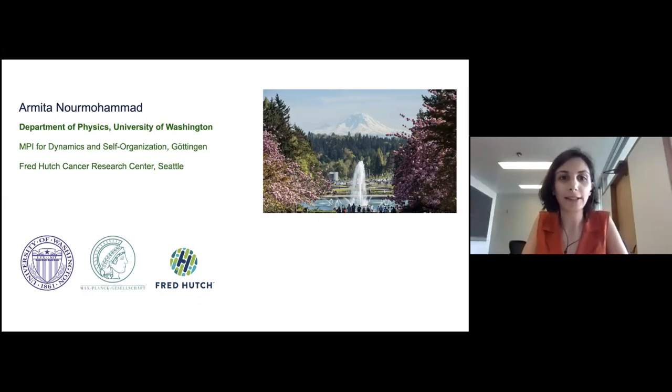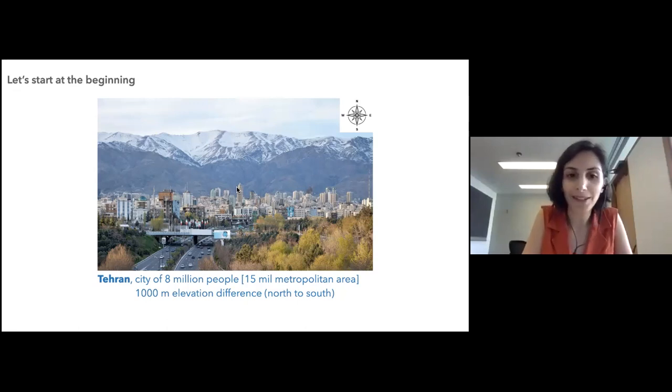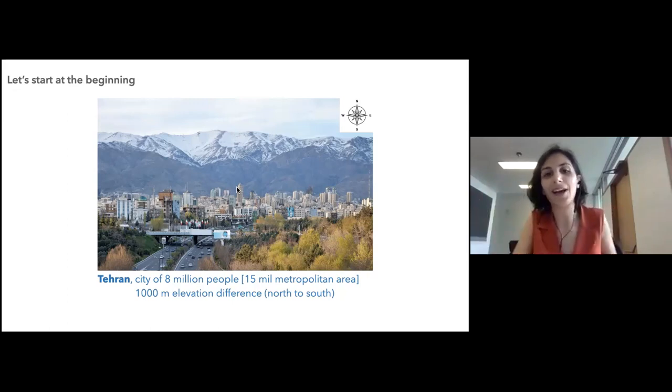I'm currently at the University of Washington in the physics department and also at the Max Planck Institute in Göttingen. You'll hear towards the end of the talk how this arrangement has come about. So let's start at the beginning. I was born in Tehran in Iran and this is the picture I'd like to remember when I think about it. It's a city of about eight million people, fifteen million if you count the metropolitan area. There's a huge elevation difference in Tehran, it's built on a slope. North to south is a thousand meter elevation difference and it's quite high so it can get cold and it snows and you have this beautiful mountain scenery around it.